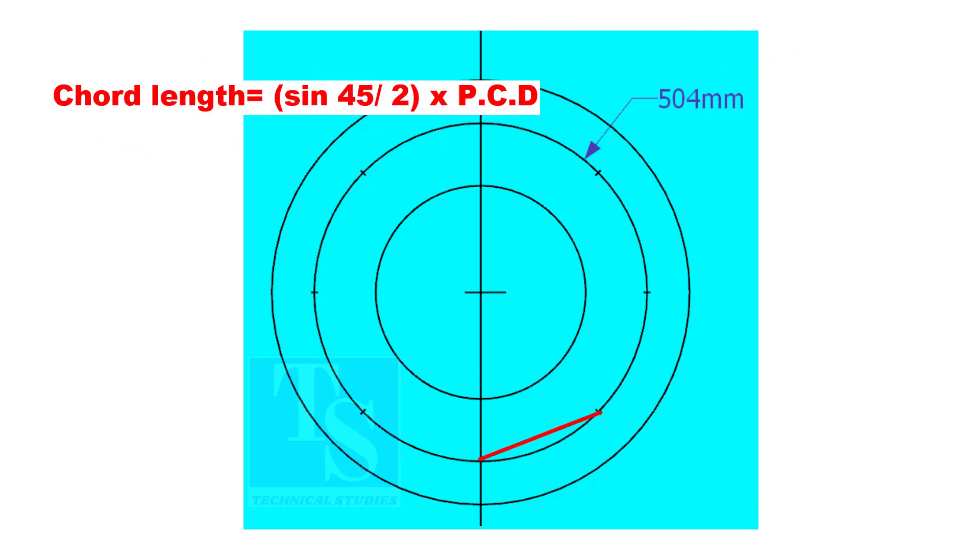Chord length equals sine 45 divided by 2 multiplied by PCD.